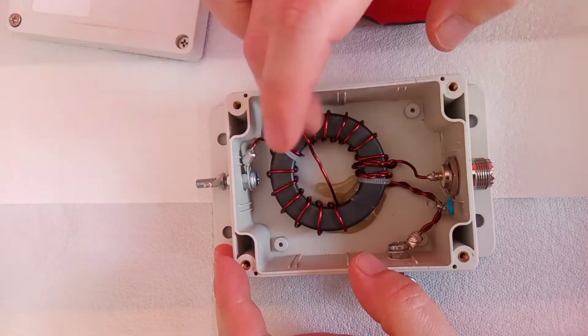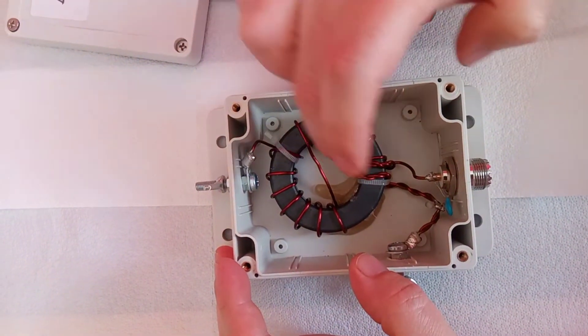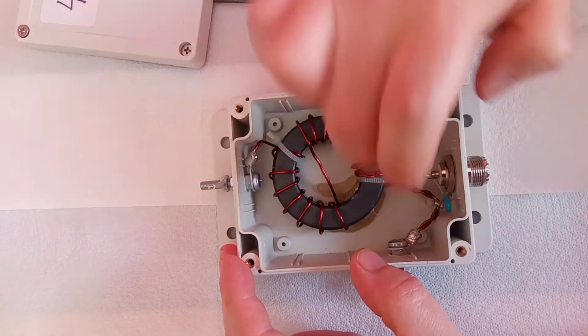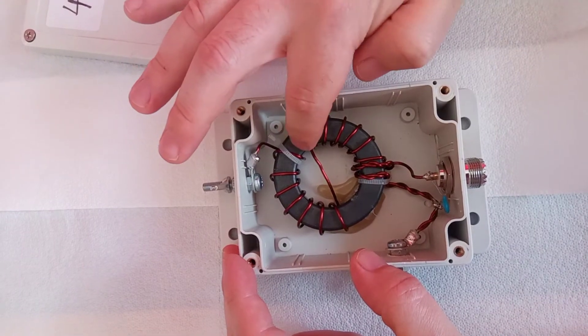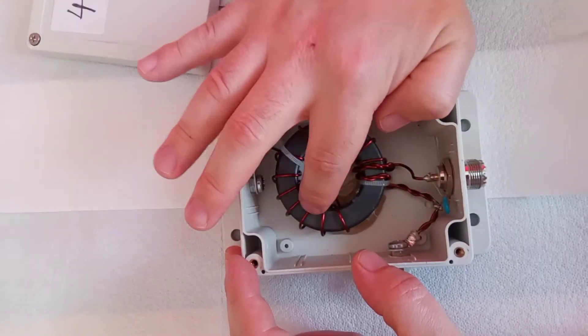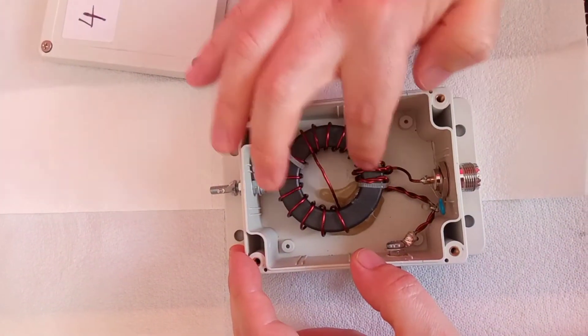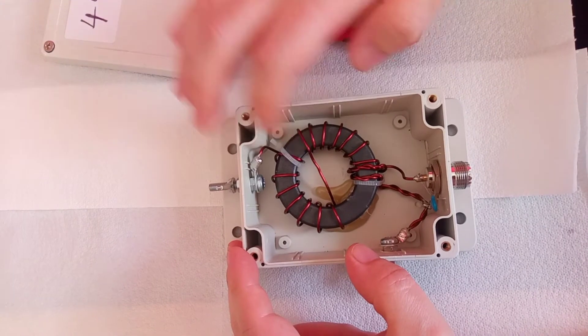Now, to determine that it's a 49 to 1 transformer, we divide the secondary by the primary. This is the 2 primary, so we have 1, 2, 3, 4, 5, 6, 7, 8, 9, 10, 11, 12, 13, 14. We have 14 secondary, and we divide that by the 2 equals 7, and 7 squared equals 49 to 1.